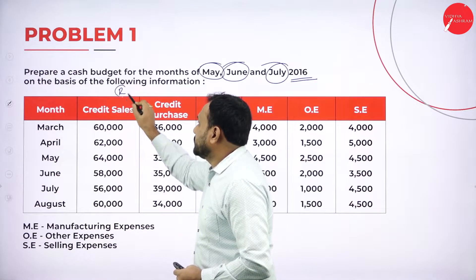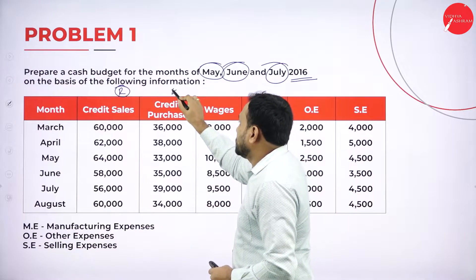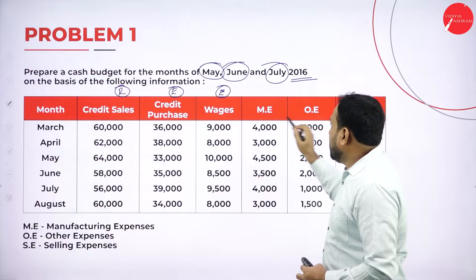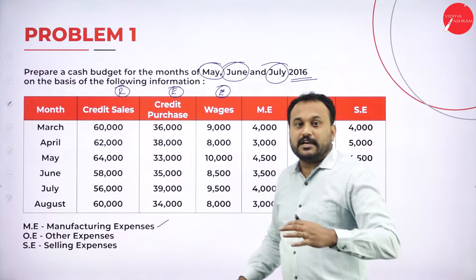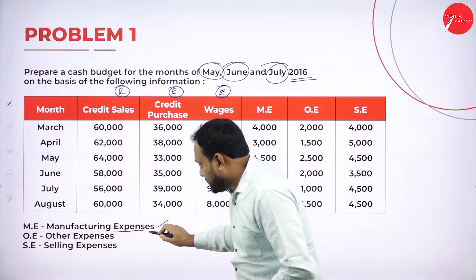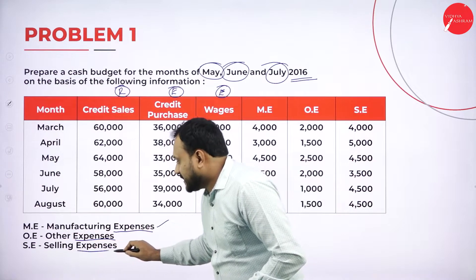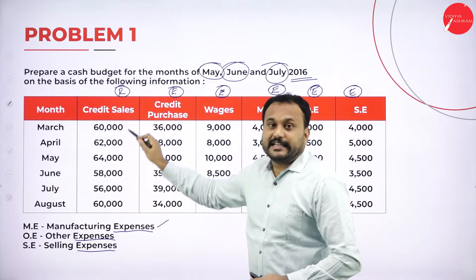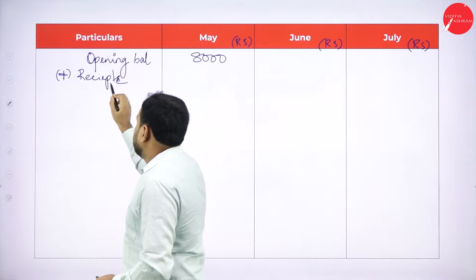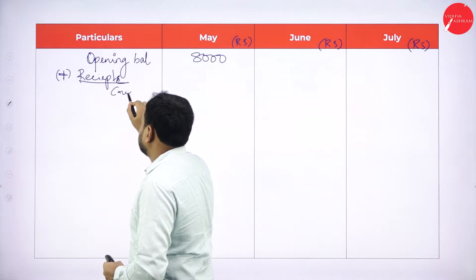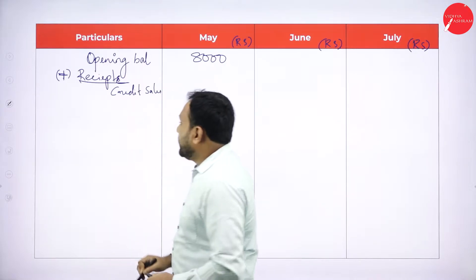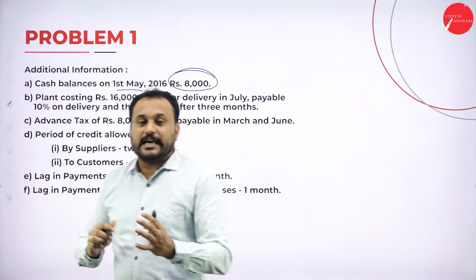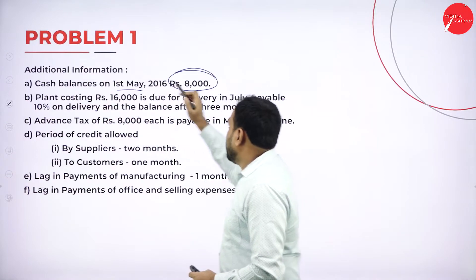Under receipts, we need to identify which items are inflows. Sales is our inflow. Credit purchase is an outflow — it is an expense. Wages is an expense — goes from my pocket. Manufacturing expenses, other expenses, selling expenses — all are expenses. So what do we have as receipts? Only the credit sales. In the receipts section, we have only one entry: credit sales. We need to check the adjustments given for credit sales.